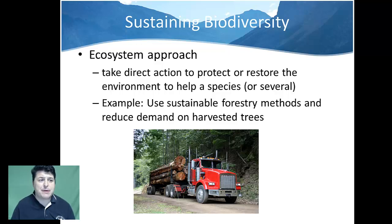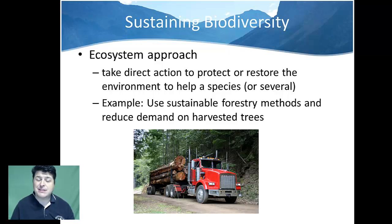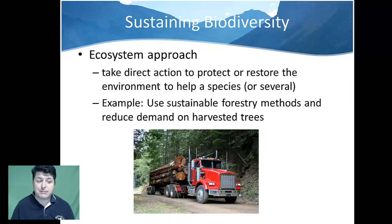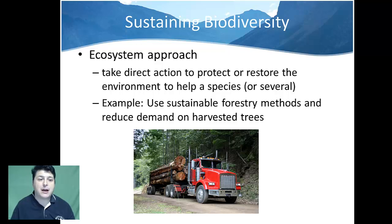The second type of strategy for sustaining biodiversity is the ecosystem approach, where we take direct action to protect or restore the environment in order to help protect a particular species or multiple species. For example, using sustainable forestry methods and reducing demand on harvested trees protects crucial habitats — especially untouched forests — so we can establish populations of organisms that might be threatened or endangered.